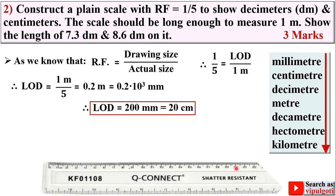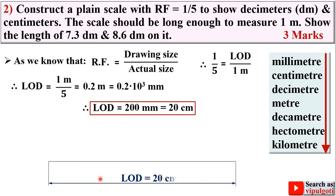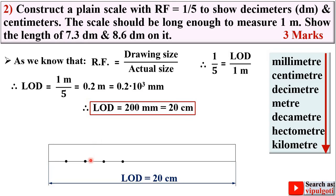From here to here this is 20 centimeter — draw the horizontal line; this is your length of drawing, LOD. Now draw the vertical line equal to 1 centimeter and complete the rectangle. The scale should be long enough to measure 1 meter, so divide the scale into 10 equal divisions and start the second point with 0.